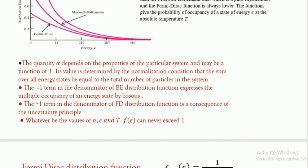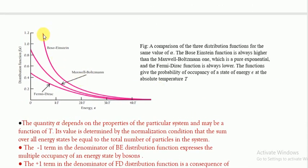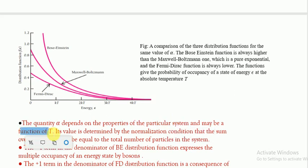Looking at the graph: the Bose-Einstein distribution gives higher values, the Fermi-Dirac distribution gives lower values, and the Maxwell-Boltzmann distribution lies in between when E is much greater than kT. Under that condition, the minus one and plus one terms become negligible and both Bose-Einstein and Fermi-Dirac distributions approach the Maxwell-Boltzmann distribution. The value of α can be found using the normalization condition from quantum mechanics.